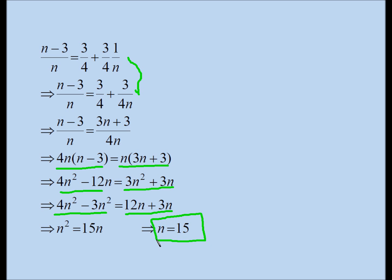There were fifteen slices. It's okay to divide by n because n cannot be zero — n is larger than three.